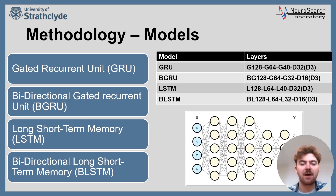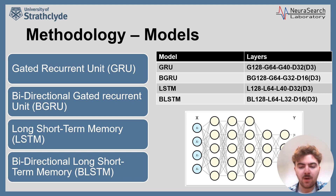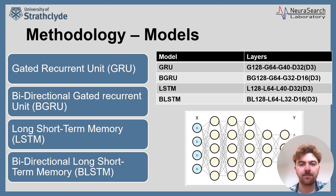In prior works that aim to classify mental workload from subjects, deep learning models have adequately classified EEG data. As such, we make use of the following models: GRU, BGRU, LSTM, and BLSTM. The architecture of each model is shown in the table, where G, BG, BL, and D correspond to the GRU, BGRU, LSTM, BLSTM, and the dense layer respectively. The unit count starts at 128 for the first layer, moving down to 64, then to 40 or 32 for some models, followed by a dense layer of either 32 or 16 depending on the model. All models have a final dense layer with three units corresponding to each of the workload levels we are trying to predict: low, medium, and high.